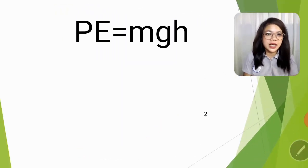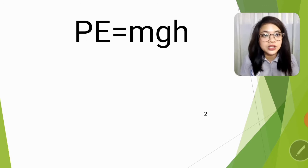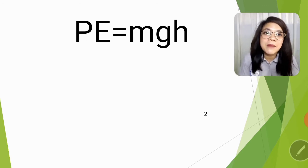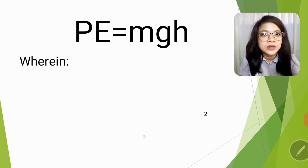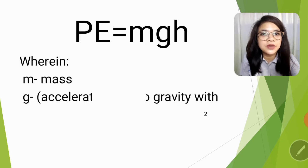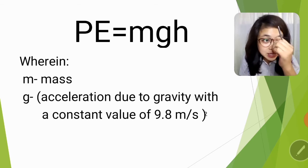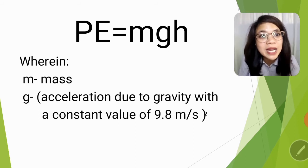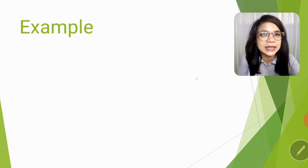The formula for potential energy is MGH. Just multiply the value of the mass, the acceleration due to gravity, and the height. Again, iba ang kay kinetic energy at iba ang kay potential energy. Wherein M stands for mass, G is for the acceleration due to gravity with a constant value of 9.8 meter per second squared. Again, that is constant. Ibig sabihin hindi siya nagbabago. Yun lagi ang value ni G. Then height, which is the H. Multiply lang sila lahat.